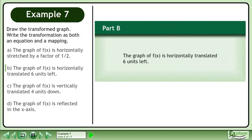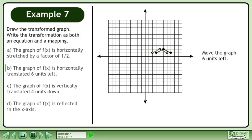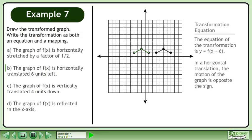In part b, the graph of f is horizontally translated 6 units left. Move the graph 6 units left. The equation of the transformation is y equals f of x plus 6. In a horizontal translation, the motion of the graph is opposite the sign.